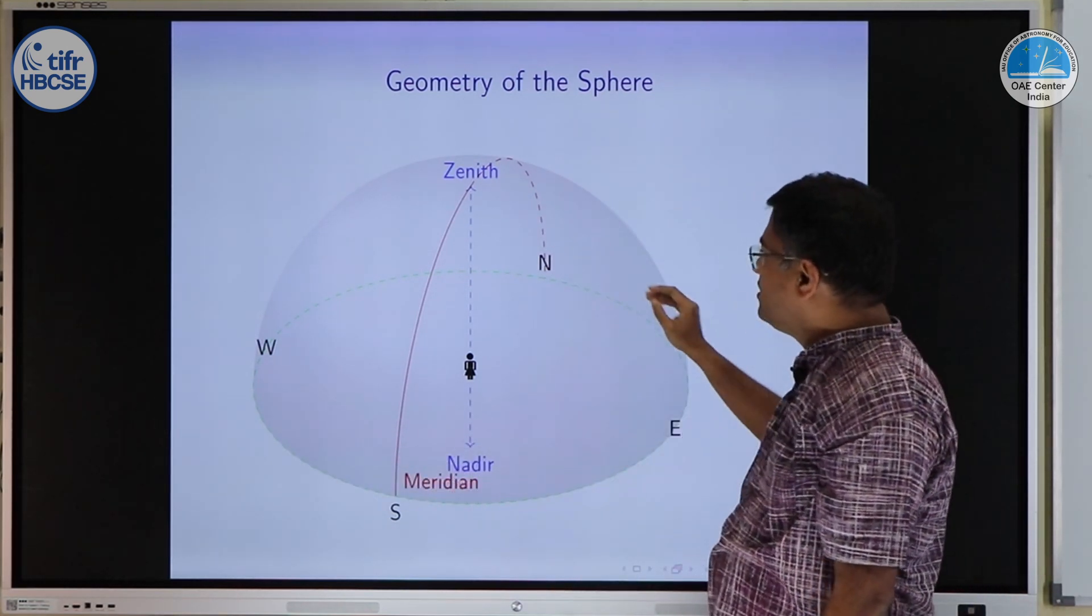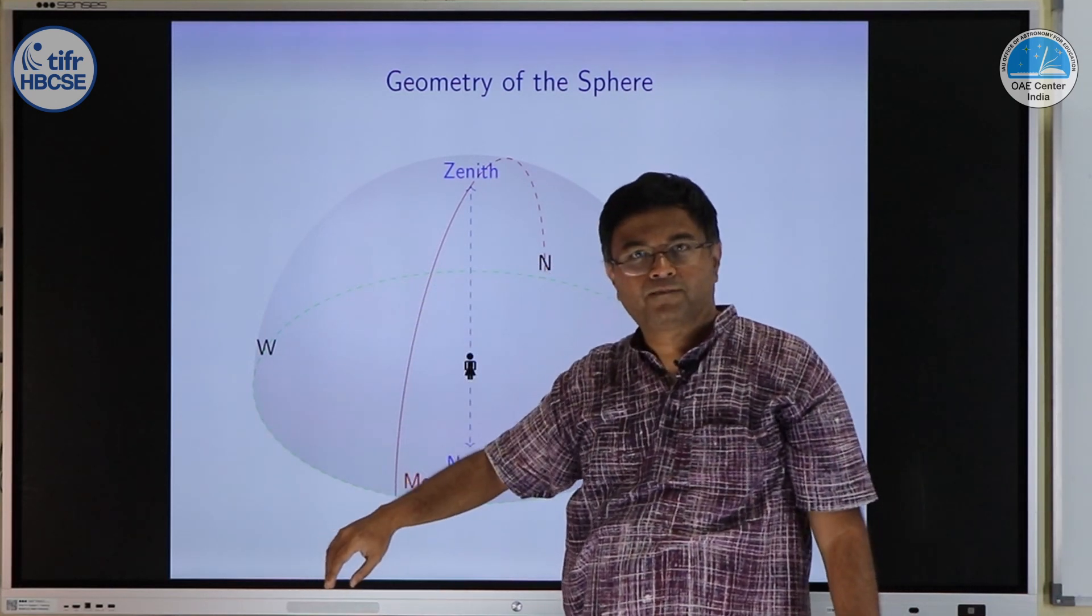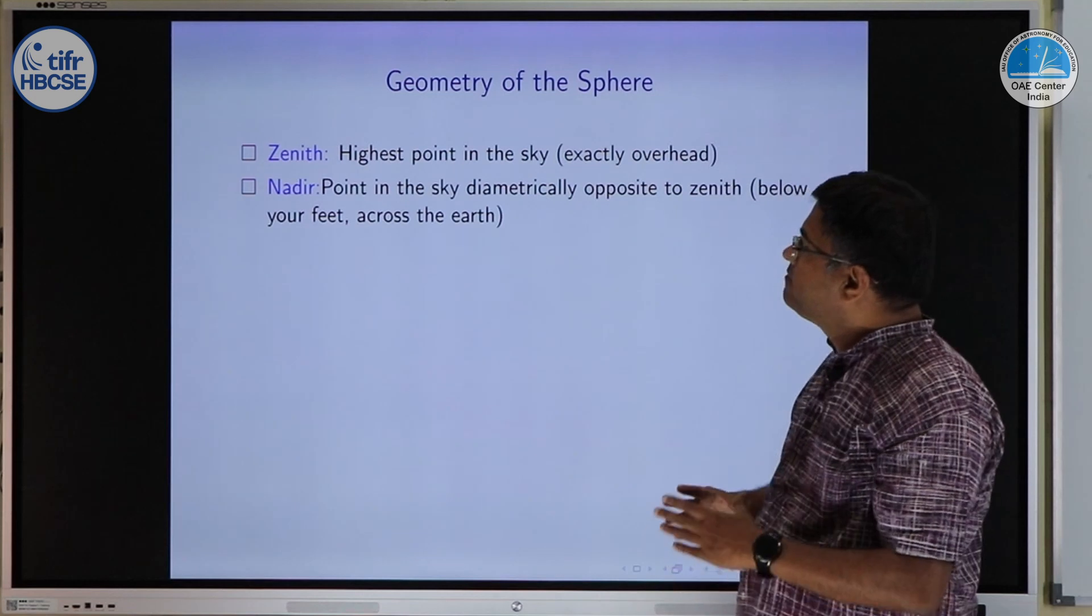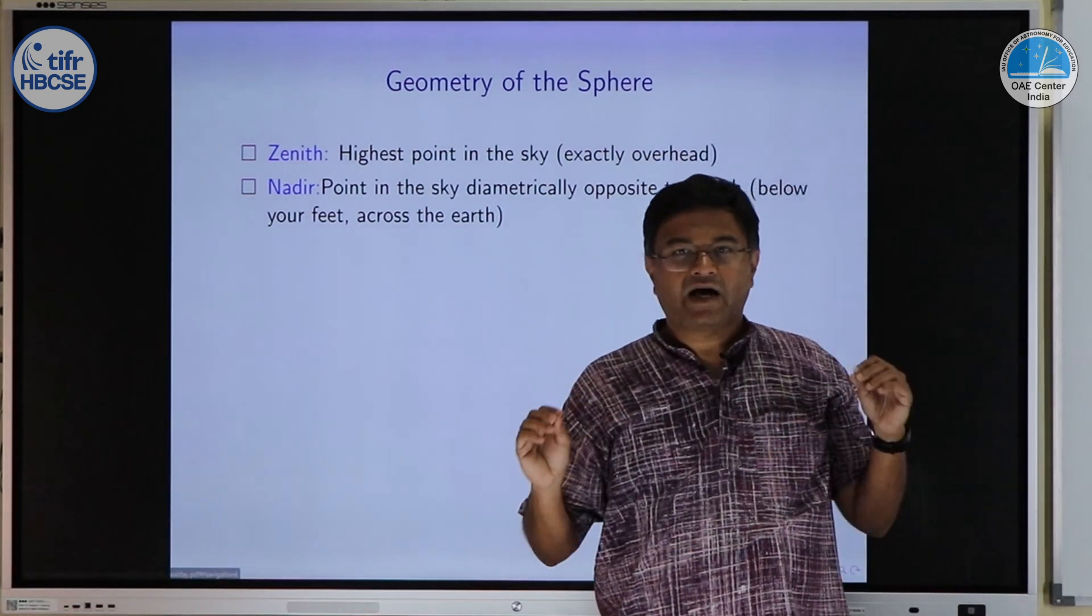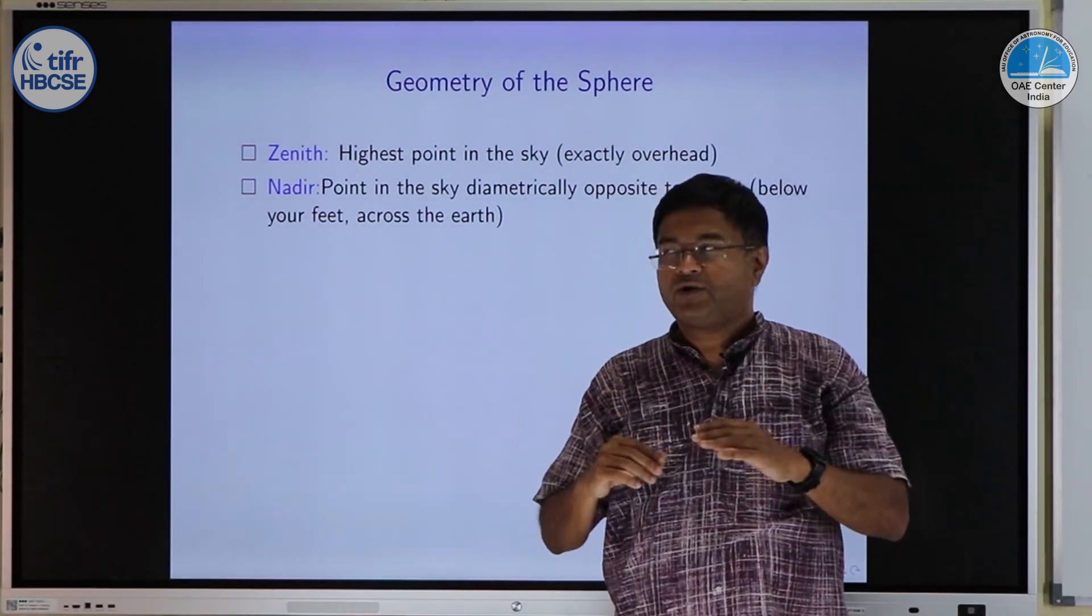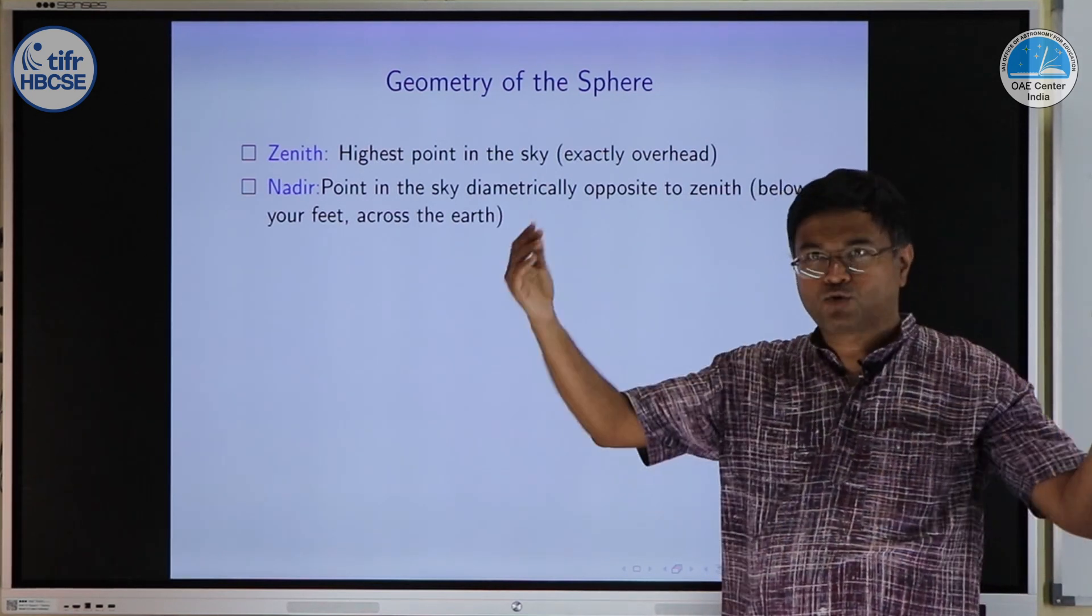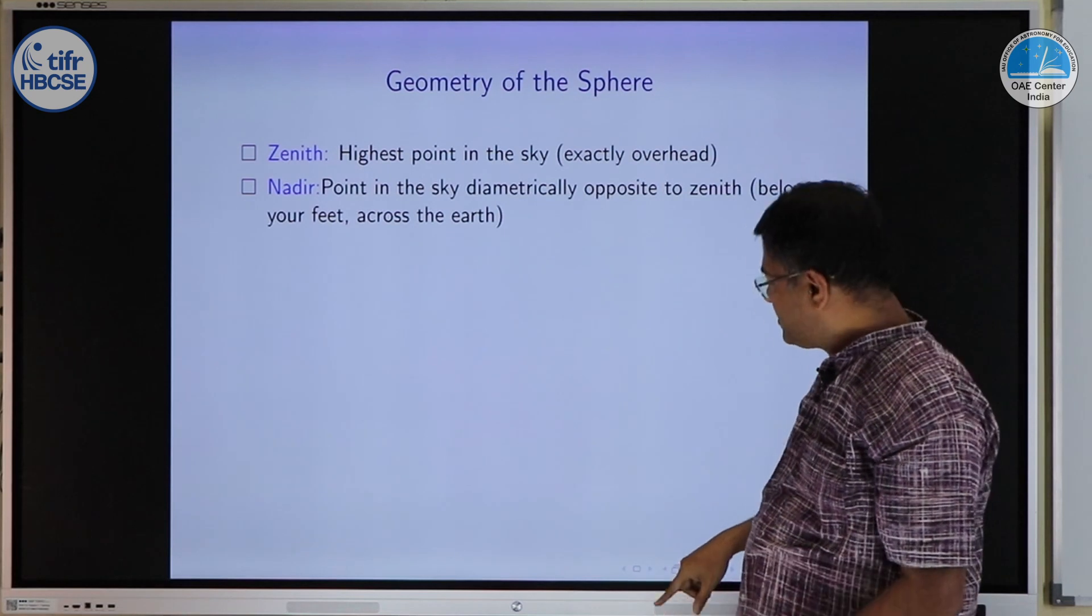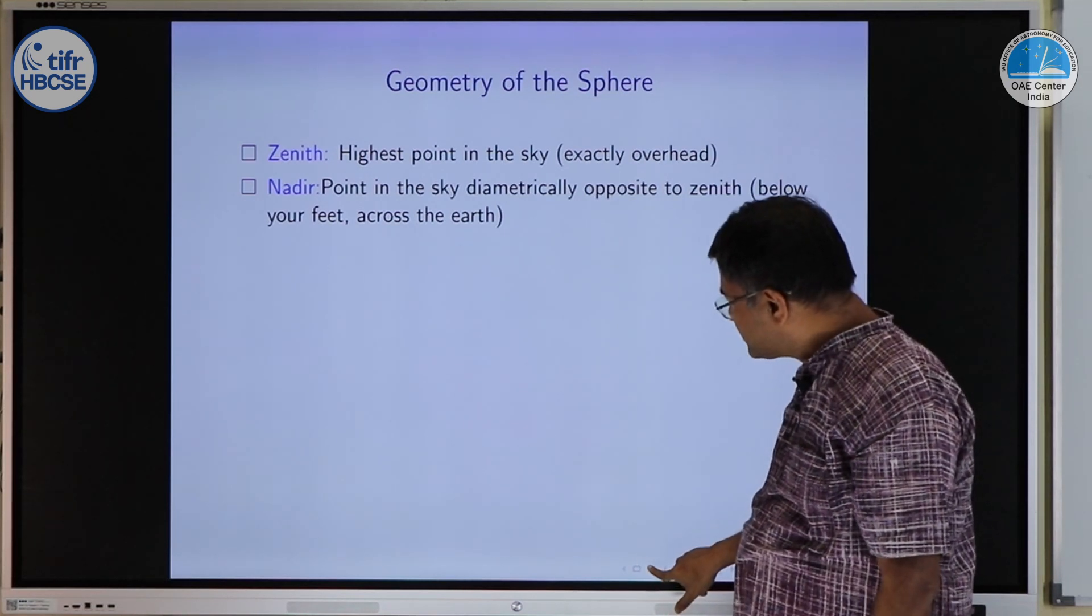Here the green line shows the horizon for the observer. Formally zenith is the highest point for that observer as seen in the local sky which is exactly overhead. Nadir is exactly the point which is diametrically opposite to that on the celestial sphere.